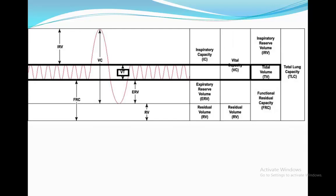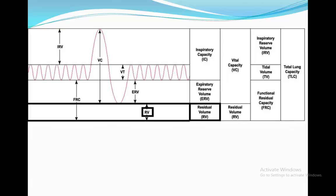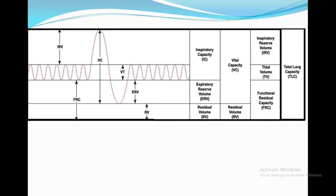The tidal volume means the volume of air you breathe in during a normal breath. The vital capacity is the amount of air you breathe out after full inspiration. Residual volume is the volume of air left in the lungs after fully breathing out. Total lung capacity is the amount of air your lungs can hold after maximum inspiration.